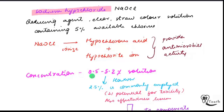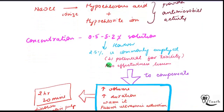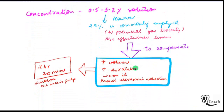The concentration range of NaOCl is 0.5 to 5.2% solution; however, we use 2.5%. Why? Because at higher concentrations there is toxicity potential — at 5.2% it will be toxic. When you reduce the concentration the effectiveness also lessens, so to compensate you increase: volume, irrigation duration, warm it, and use passive ultrasonic activation. These four things compensate for reduced concentration.